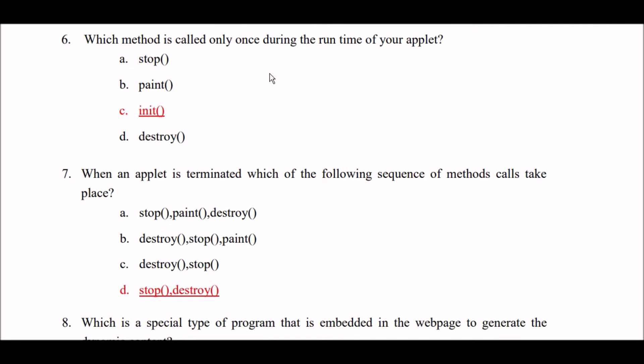Which method is called only once during the runtime of your applet? Option A: stop method. Option B: paint method. Option C: init method. Option D: destroy method. The right answer is Option C — init method. Init method is called only once during the runtime of your applet.